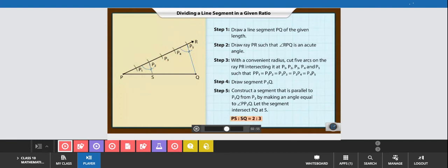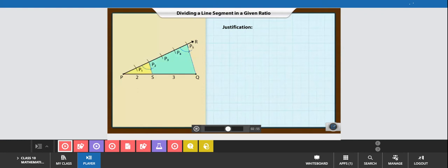The point S divides the segment PQ in the ratio 2 is to 3. But how do we justify this? Let's see. We had drawn P2S parallel to P5Q.